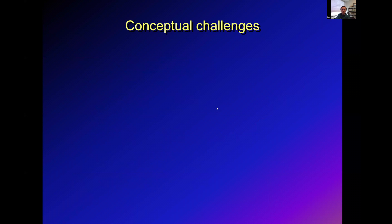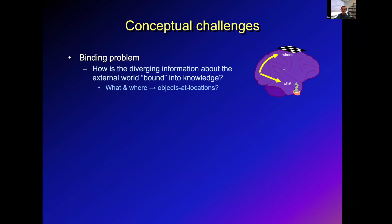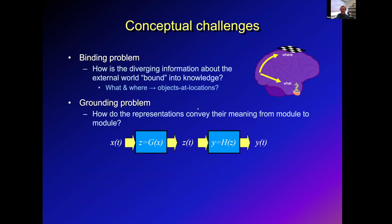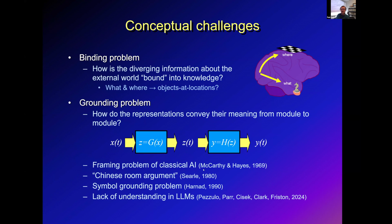In addition to neural challenges, there are conceptual ones. One is the binding problem: if you have diverging information about where things are versus what things are, how is that bound into knowledge of what is where? Another, perhaps more fundamental, is the grounding problem: how do the representations passed from system to system convey their meaning — not the syntax, but the semantics? This is a very old problem identified in classical AI, called the framing problem — the root of Searle's famous Chinese room argument, or what Harnad called the symbol grounding problem. We and many others have suggested it underlies the apparent lack of understanding in large language models.